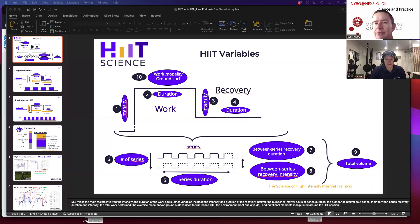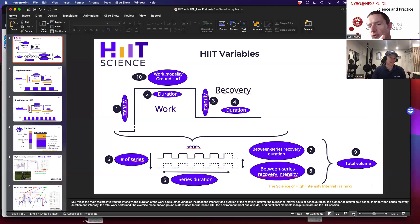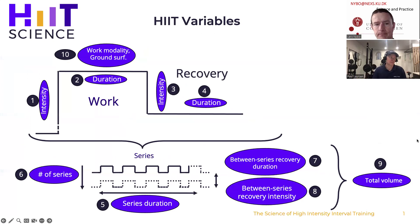It will of course be aerobic because you can have a high cardiovascular strain, but there will also be a superimposed anaerobic contribution and contribution from myoglobin as well, meaning you can get a much higher work output.